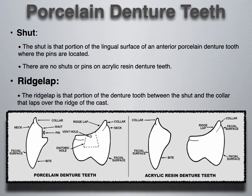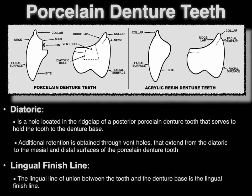The ridge lap is that portion of the denture tooth between the shut and the collar that overlaps — laps over — the ridge of the cast. Diatorics is the hole located in the ridge lap of a posterior porcelain denture tooth that serves to hold the tooth into the denture base. Additional retention is obtained through vent holes that extend from the diatoric to the mesial and distal surfaces of the porcelain denture tooth.